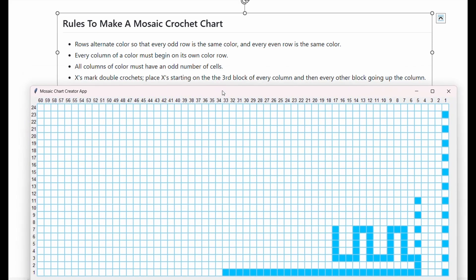This rule will help you determine if you're following the third rule, which is the X's like this mark double crochets. And you need to place X's starting on the third block of every column and then every other block on that column. So here's this white column. The third block of this white column would be this one and then every other. So it would continue like that. Here's another one.